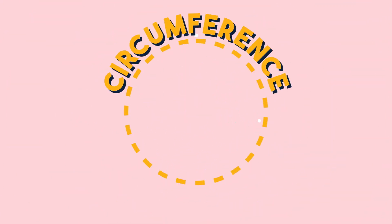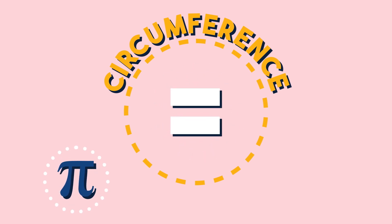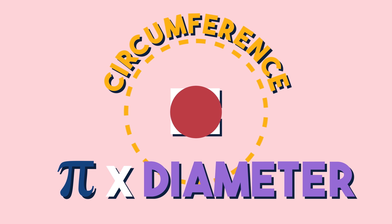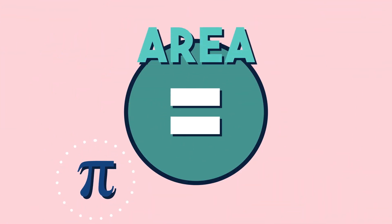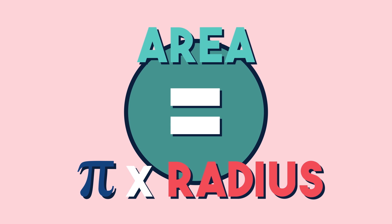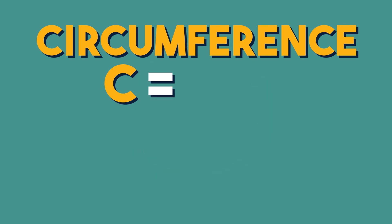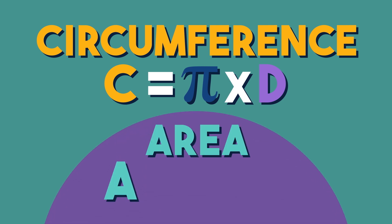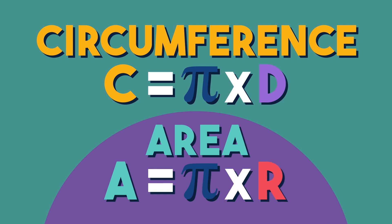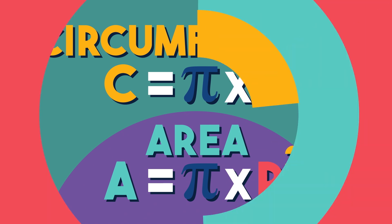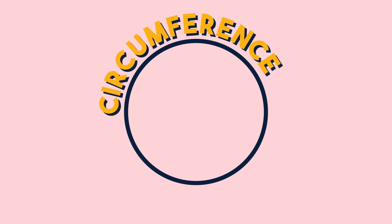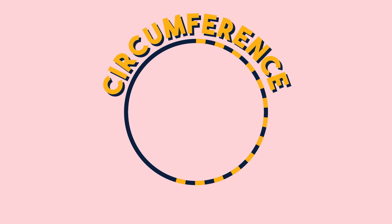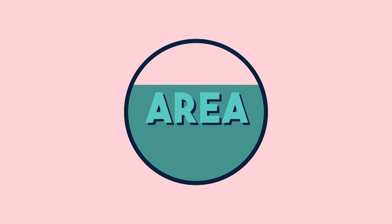The circumference of a circle is pi times diameter, and the area is pi times radius squared. Circumference is the distance around the outside of the circle, and the area is the space that it covers.